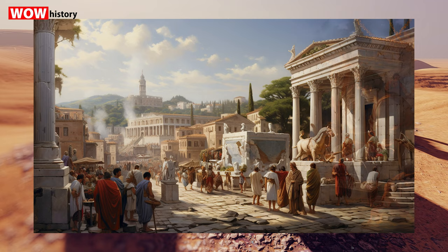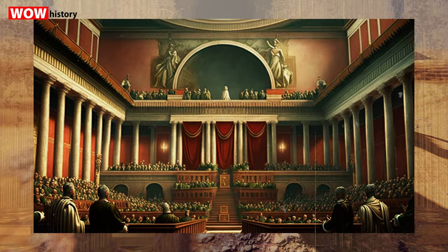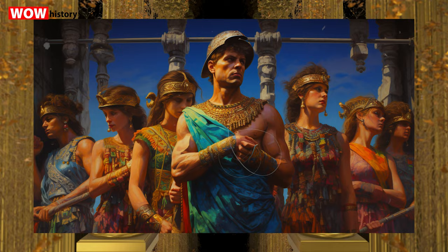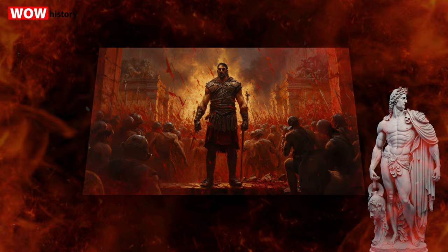In earlier times, Roman citizens could be forced into slavery, known as nexum, due to unpaid debts. However, the Lex Poetelia Papiria law, passed in 326 BC, abolished this form of slavery for Roman citizens. While slaves in ancient Rome were largely oppressed and had limited rights, they didn't remain passive in the face of their oppression. The most famous slave revolt was the Third Servile War, often known as the Spartacus Revolt.